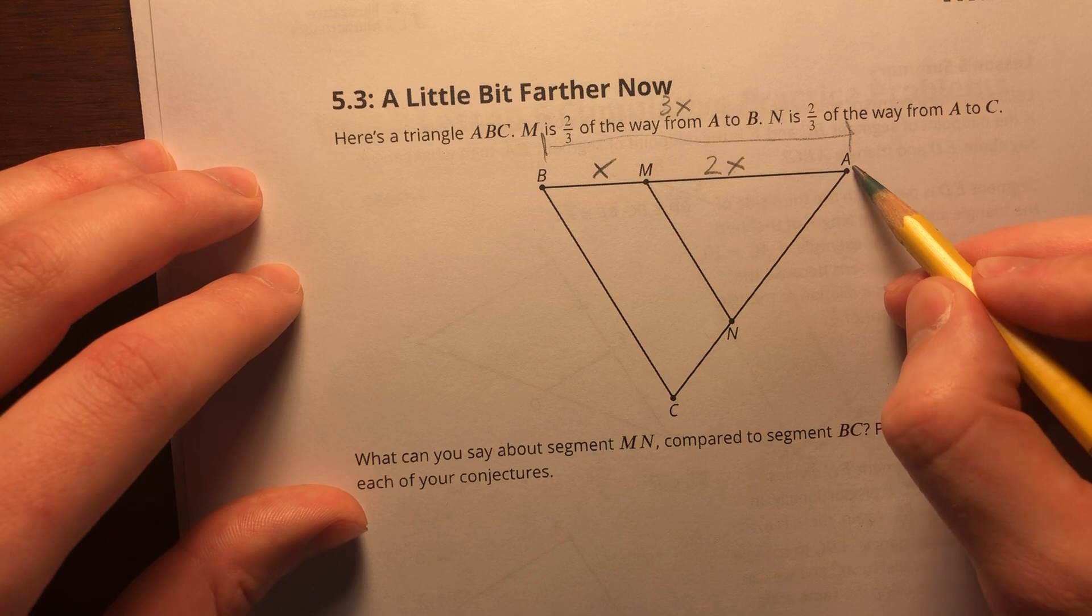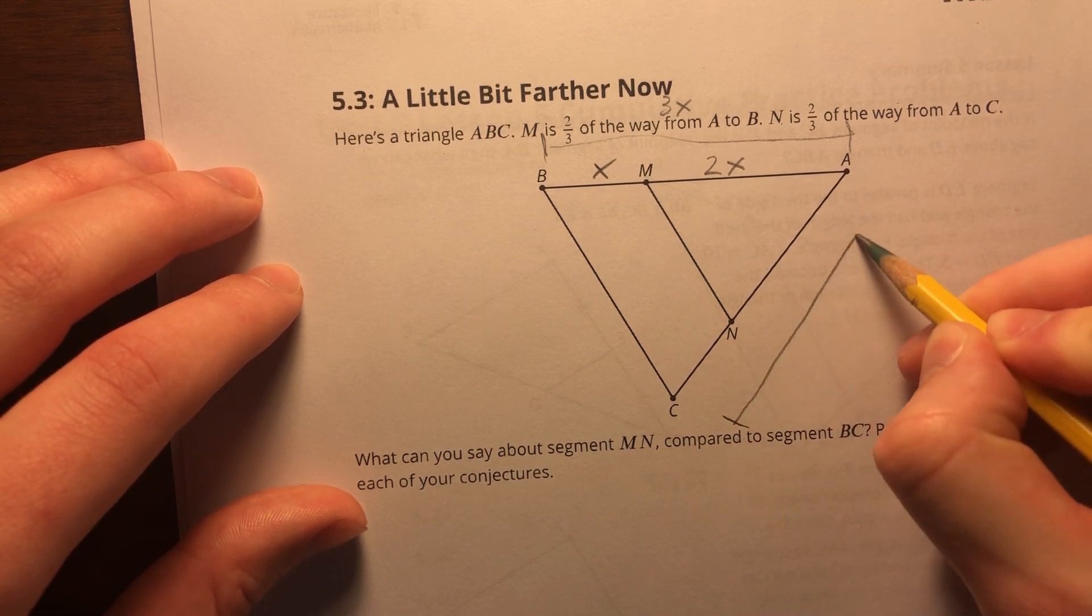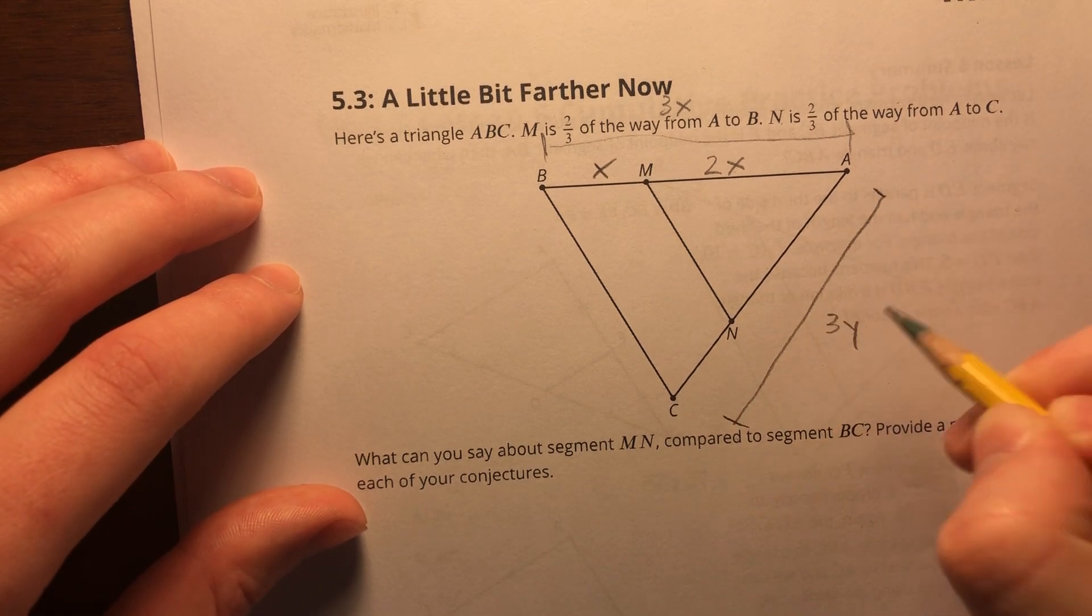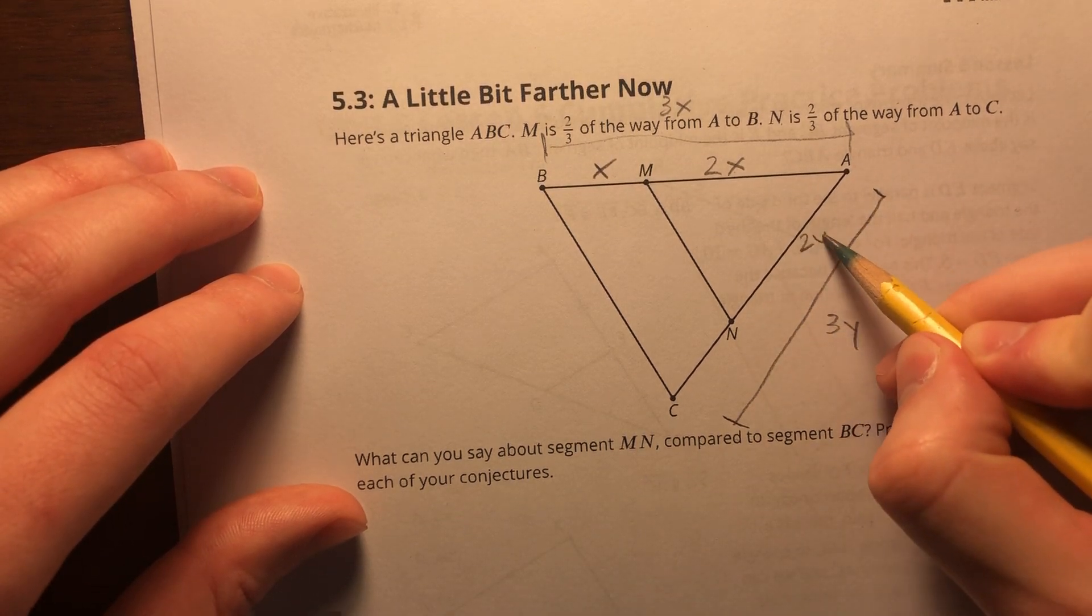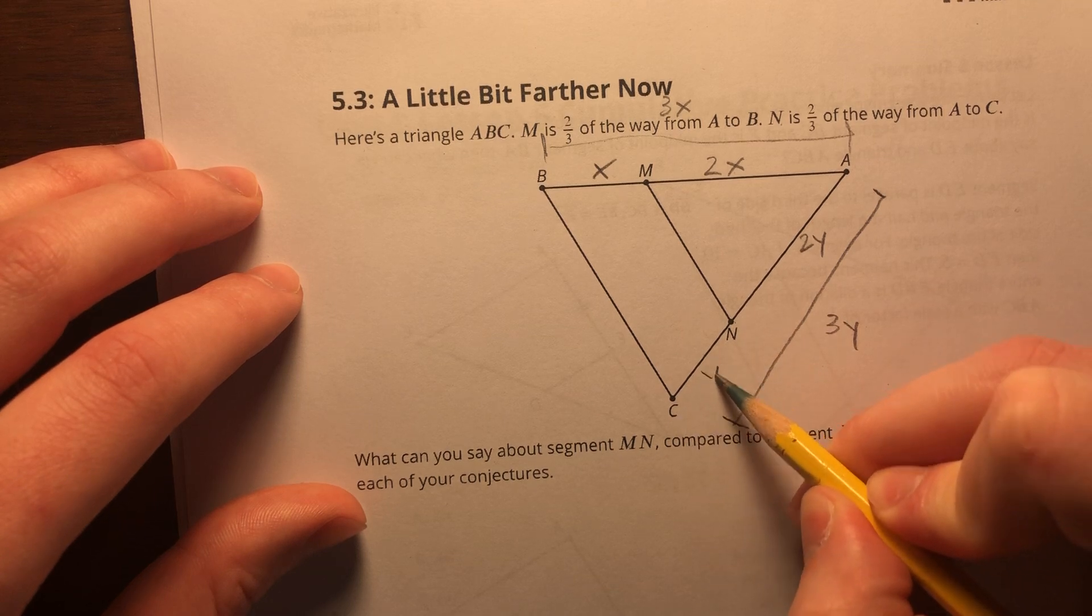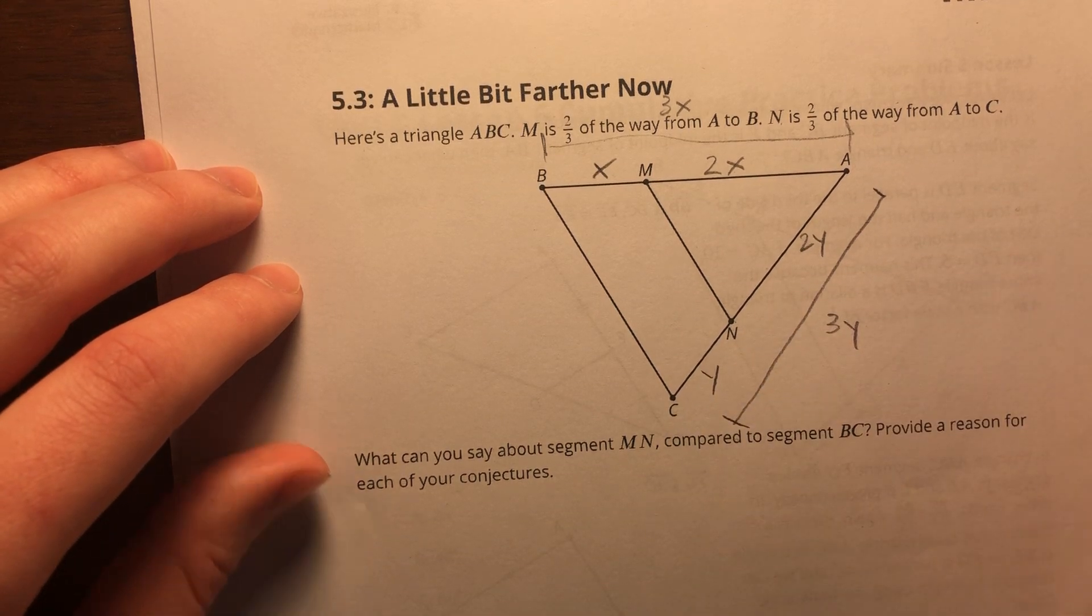I can do the same thing for AC. Let's call this entire side AC 3y. If AN is two-thirds of the way, I'm going to call that 2y. And then lastly, I'm going to call NC just y.